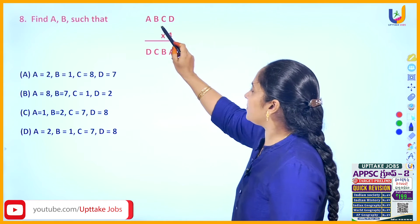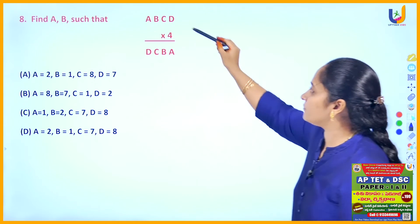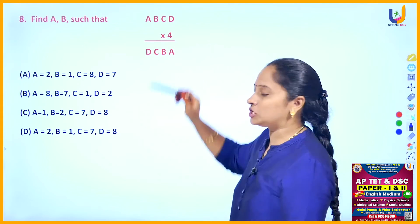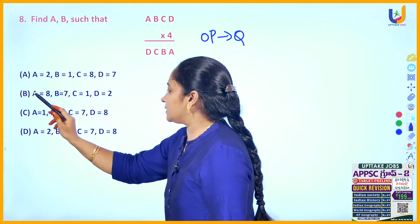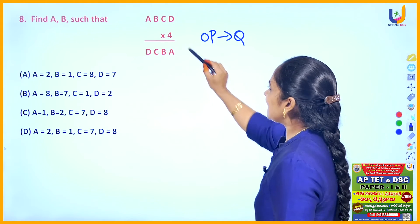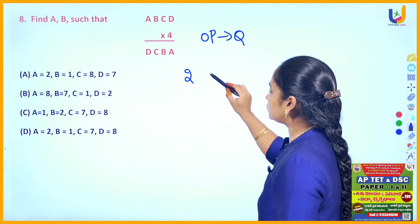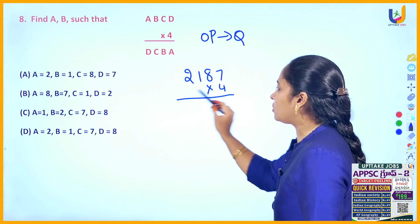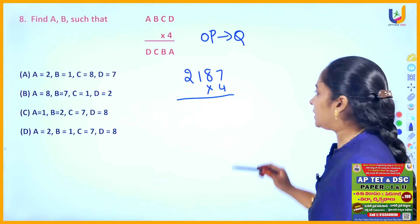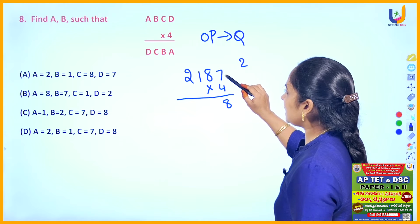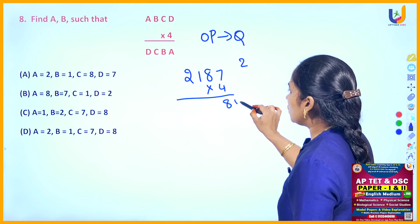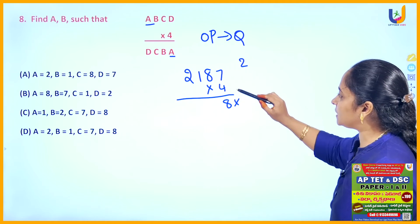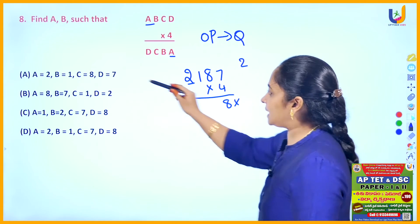The next question: find A, B such that ABCD × 4 = DCBA. That means a 4-digit number multiplied by 4 gives the digits in reverse order. In such number system questions it is better to use the option-checking method. The first option gives A=2, B=1, C=8, D=7. Multiplying: 4 sevens are 28, but A should appear as the units digit — it does not match, so this option is ruled out.